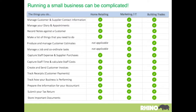Let's look at what's involved in running a typical small business. When you list it out, it's complex — everything from managing all of your customers and suppliers, scheduling all of your appointments, getting estimates out, tracking expenses, invoicing, tracking payments, preparing information for your accountant, and so on. It's very complicated.